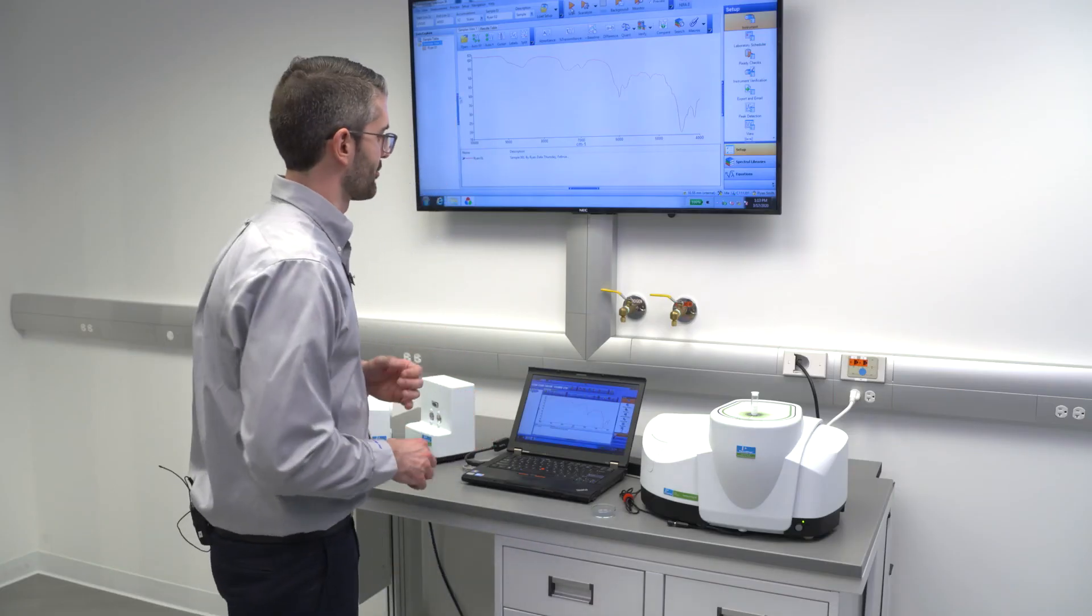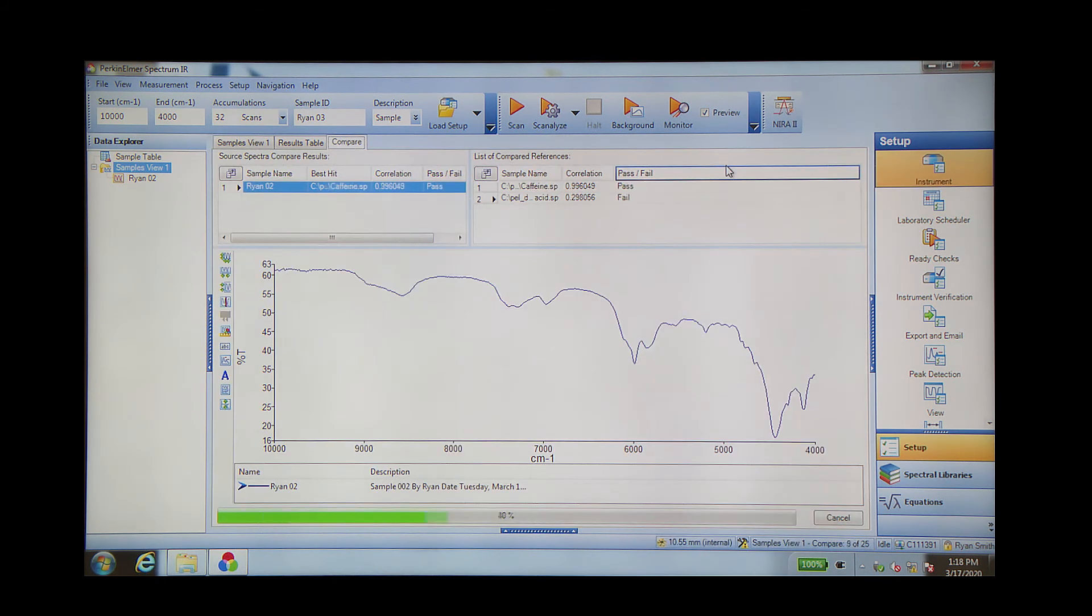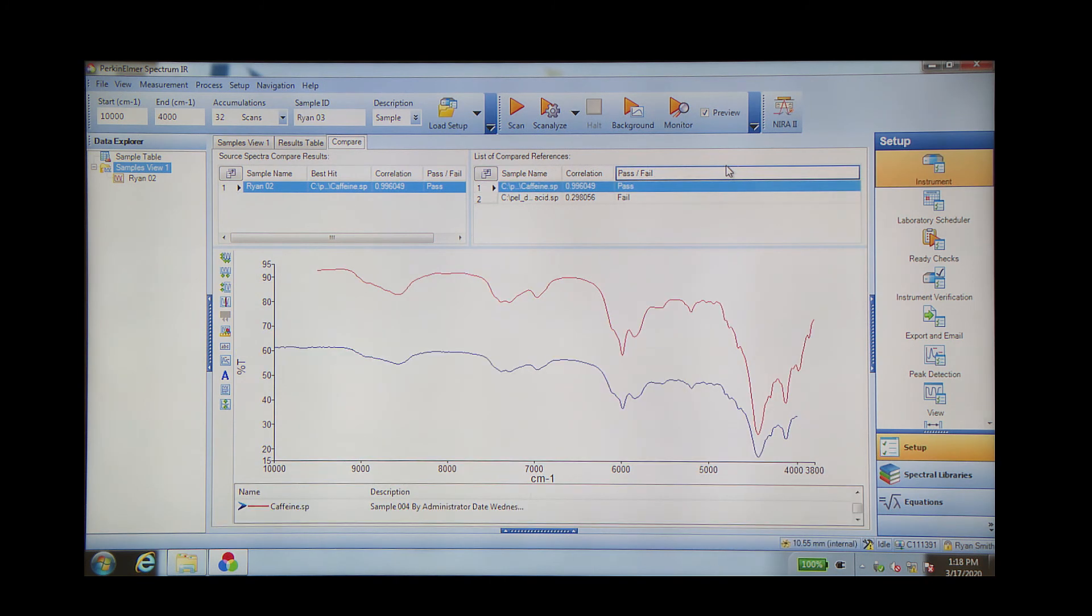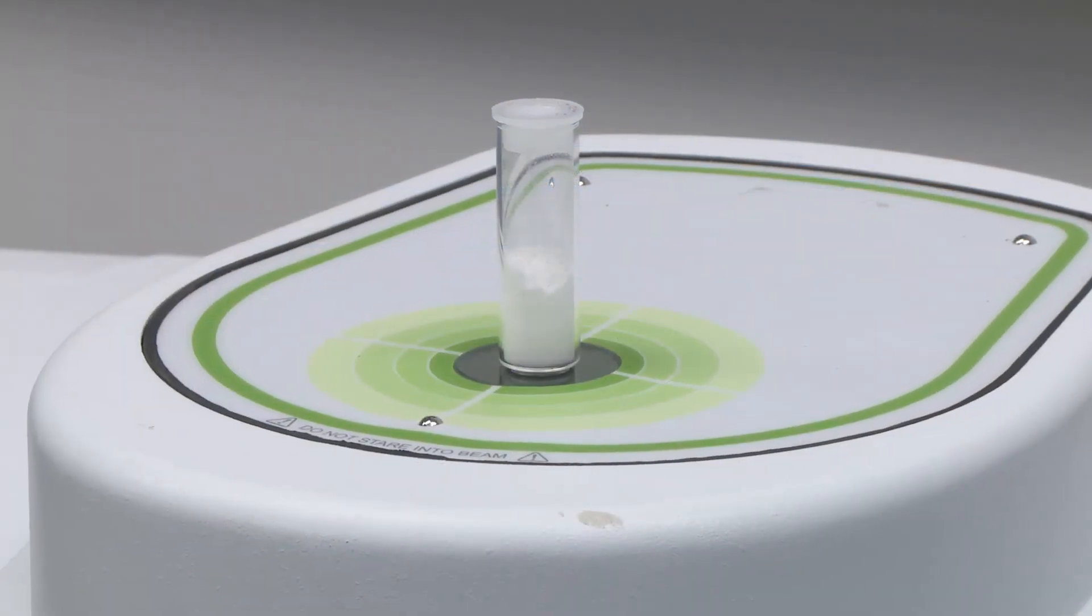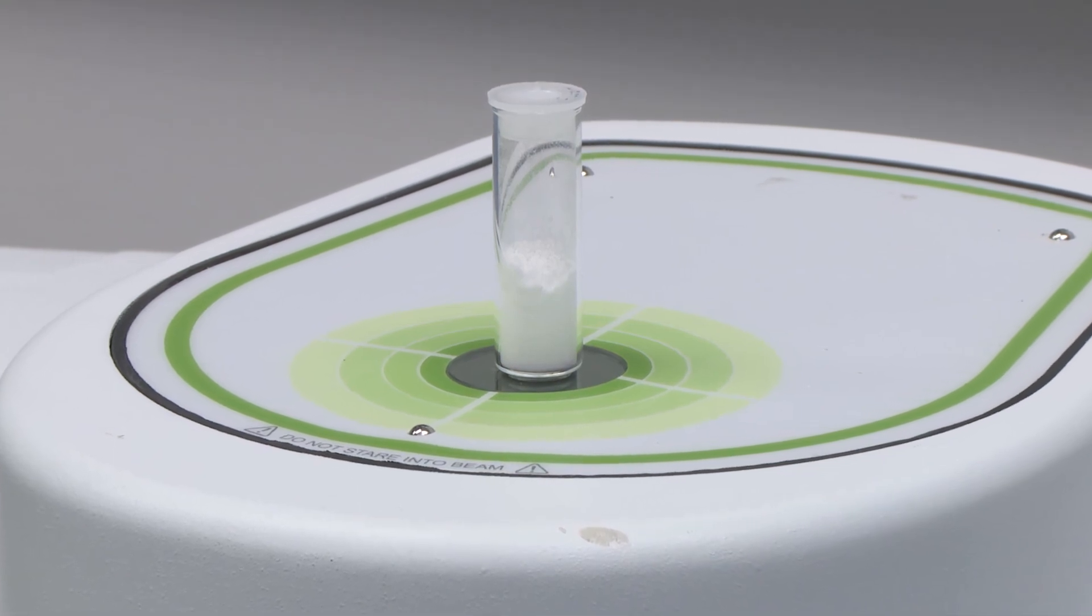To perform this comparison in the software, we simply click the Compare button. The software will then automatically go into the reference spectra which the user has saved and perform a correlation calculation between the measured test sample spectrum and the reference spectrum which was previously measured. Here we see that our correlation is 0.996, showing that our best match is for caffeine. This tells us that the sample in the vial is in fact caffeine because the correlation value is very high.